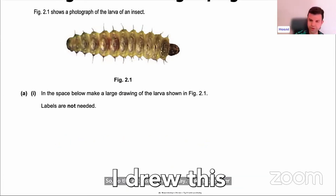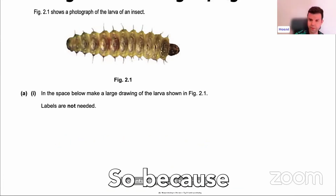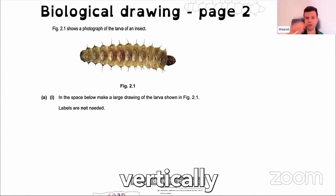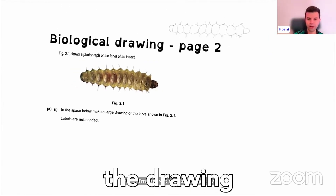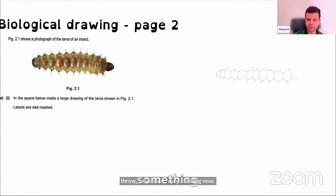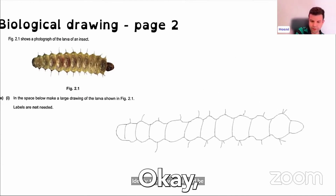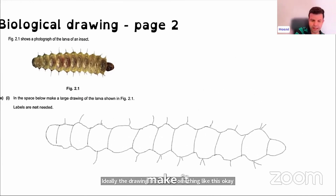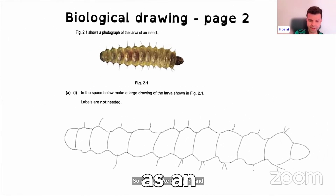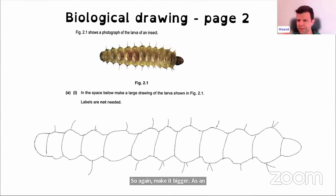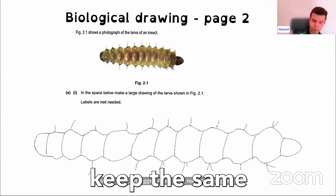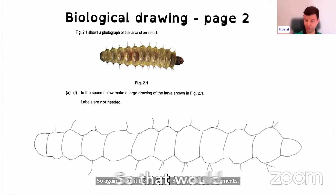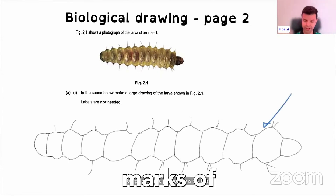Ideally, I drew this in advance because I can't draw while standing vertically. The drawing should be something like this — make it bigger, draw it as an outline, with the same number of segments, and keep the same proportions. That would score the marks for this question.